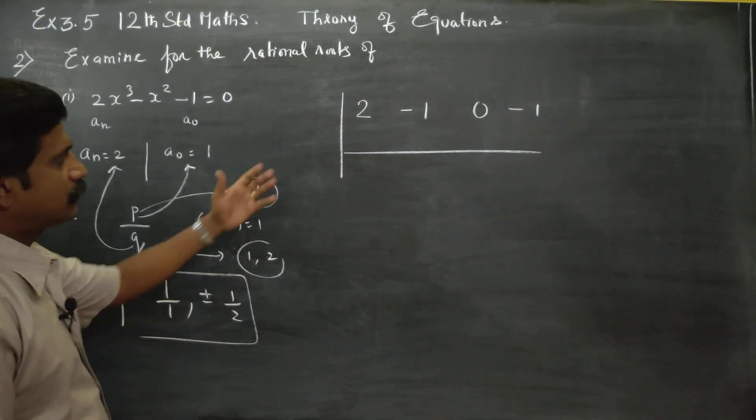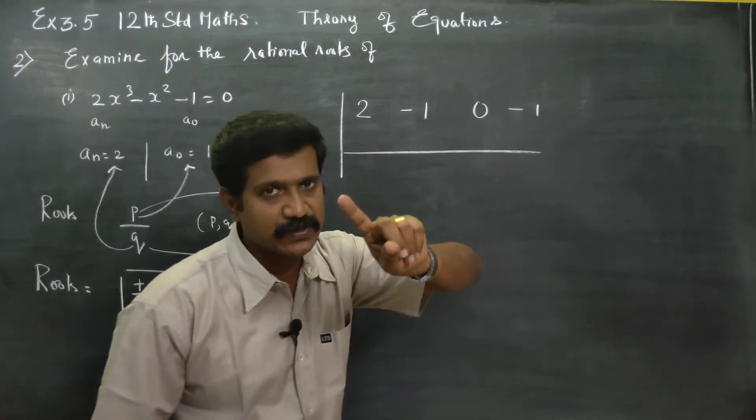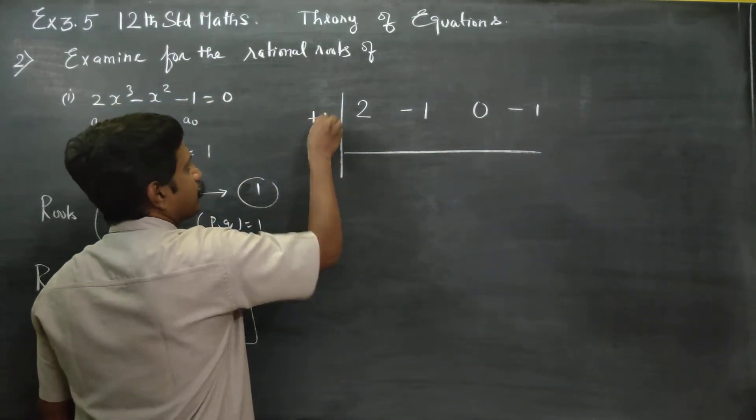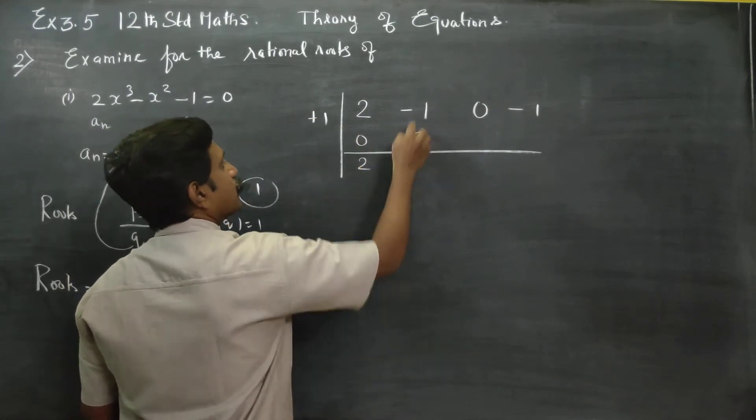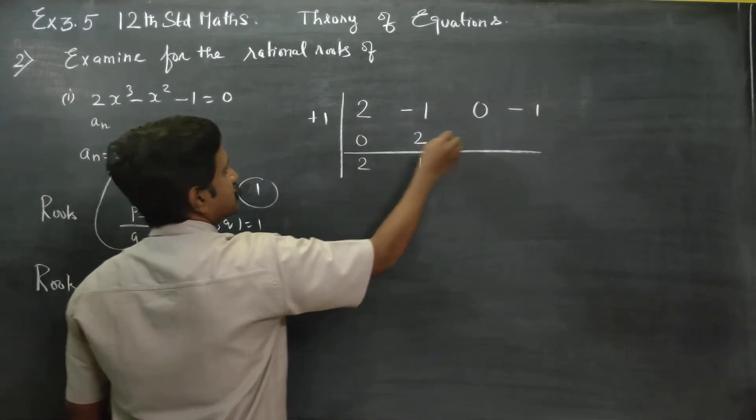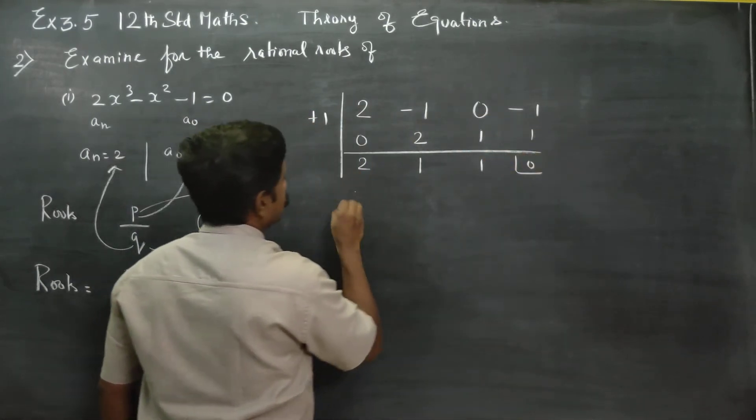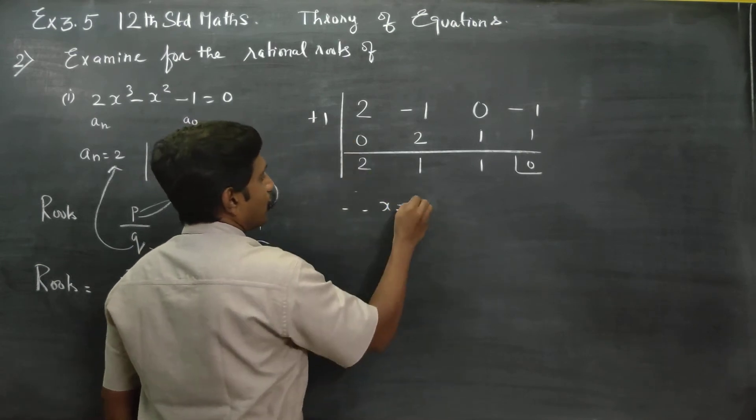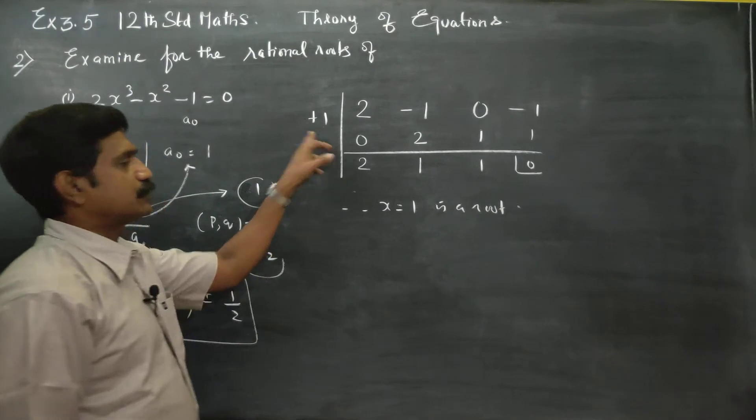Let me try plus 1. Substituting x = 1: 2(1)^2 - 1 - 1 = 2 - 1 - 1 = 0. Therefore x = 1 is a root. This is my root. Now let's find the other root.